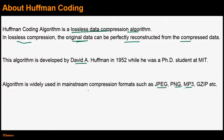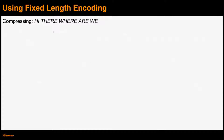Before jumping onto the Huffman coding algorithm, let's first take a look at a simple data compression algorithm where we'll be using fixed-length encoding for representing each symbol in the given input. Once we understand the simple data compression algorithm, we'll be in a better position to appreciate the Huffman coding algorithm.